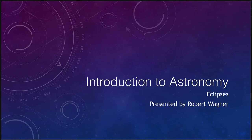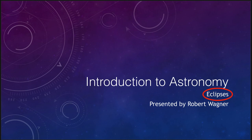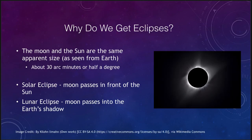Greetings and welcome to the introduction to astronomy. In this video we are going to talk about eclipses. There are two types: solar eclipses, when the sun is blocked out by the moon, and lunar eclipses, when the moon moves into the earth's shadow and is no longer illuminated by the sun. Both of these are very interesting effects that occur because of the geometry of the earth, moon, and sun system. So let's get started. First, we want to look at why we get eclipses in the first place.